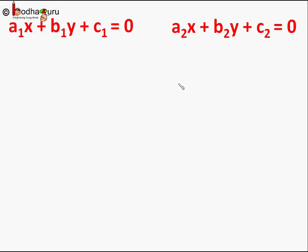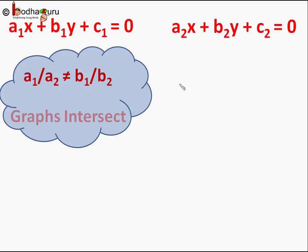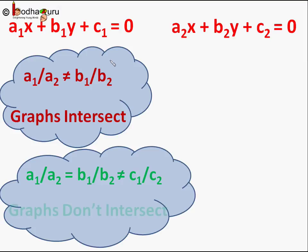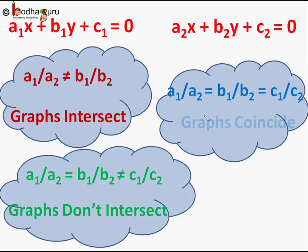To revise: given two linear equations a1x + b1y + c1 = 0 and a2x + b2y + c2 = 0 — if a1/a2 ≠ b1/b2, their graphs intersect at a common point which is the unique solution of both equations. If a1/a2 = b1/b2 ≠ c1/c2, their graphs do not intersect; they remain parallel, meaning there is no solution. If a1/a2 = b1/b2 = c1/c2, their graphs coincide — they remain on top of each other, meaning there are infinitely many solutions equal to the common part of the graph.